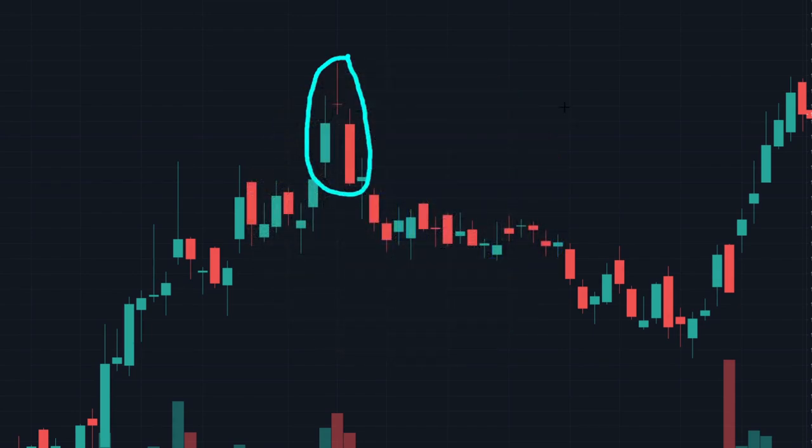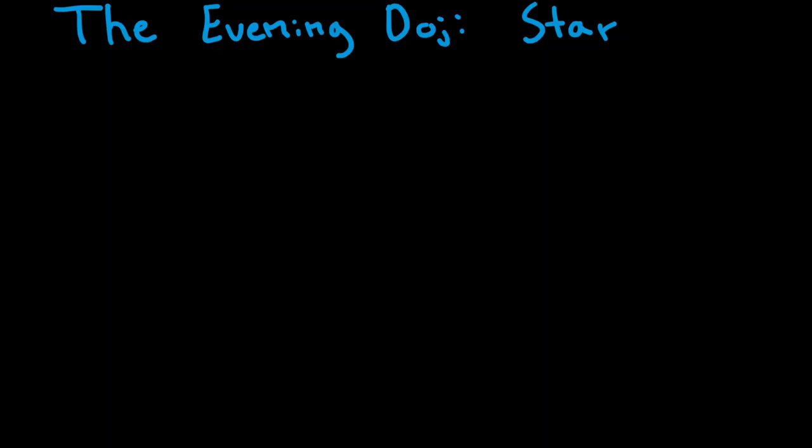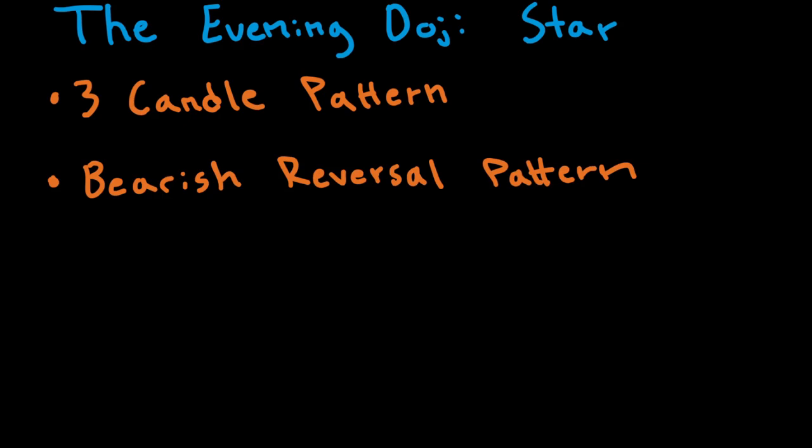All right, so the first thing we're going to do here is zoom in a bit and take a look at the pattern. The Evening Doji Star, what is it? Well, it is a three candle pattern. It is a candlestick pattern consisting of three different candles, and the Evening Doji Star is a bearish reversal pattern, meaning that it is an indicator that the upwards or bullish momentum is changing to a downwards or bearish momentum.